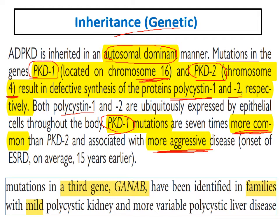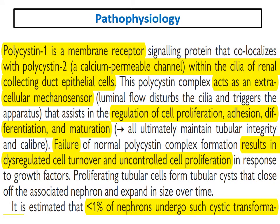There is also a mutation in a third gene, recently identified, called GANAB, found in families with mild forms of polycystic kidney disease. This may be a question in fellowship or European board exams. Now, what about the pathophysiology?